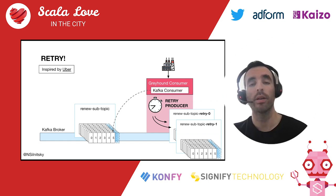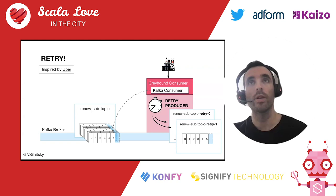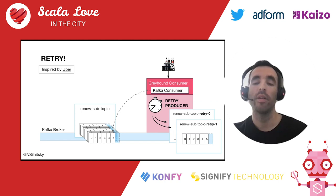This retry topics design was inspired by Uber for Greyhound. There could be many retry topics created automatically on your Kafka cluster since users set up many intervals, so it's important not to have too many partitions on these retry topics to avoid metadata overload on the Kafka cluster. Our default is just one partition per retry topic, since retry topics don't usually have high throughput.